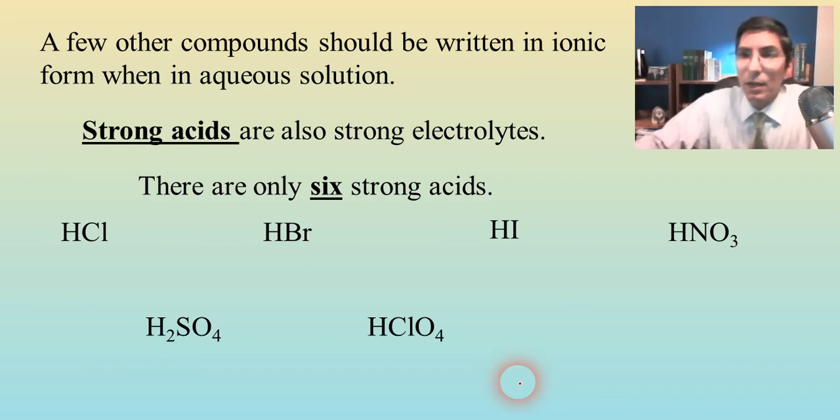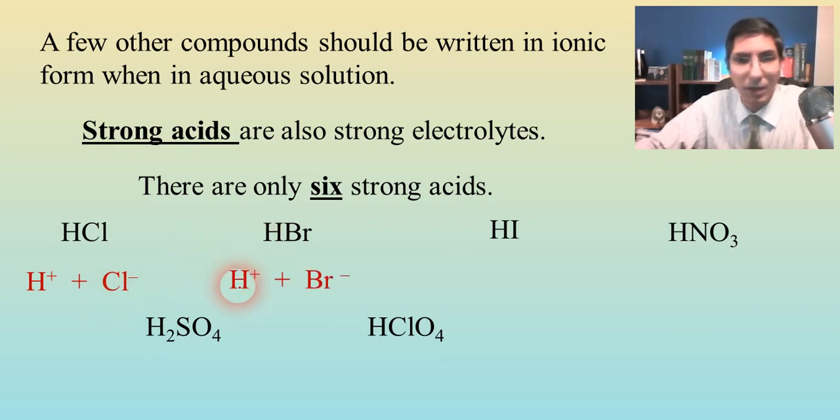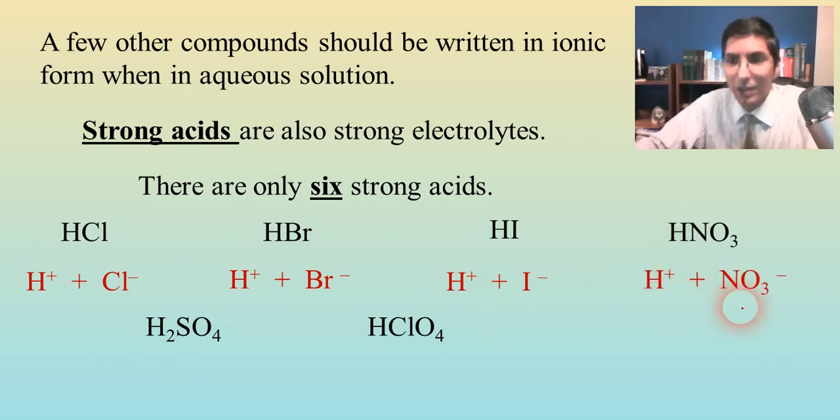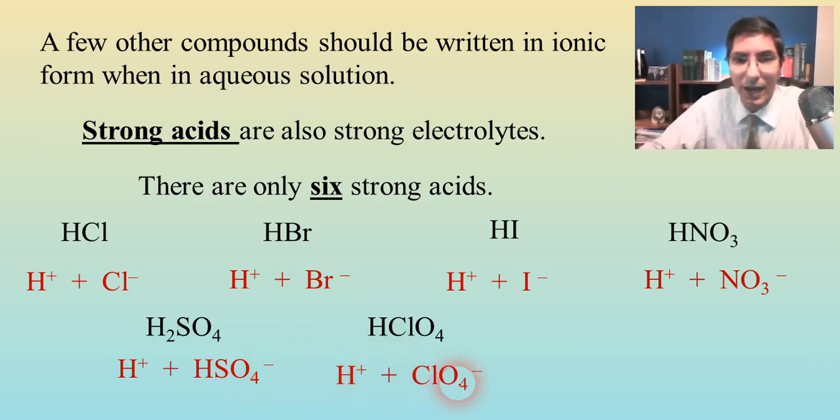Now, what that means is when these acids exist in solution, you need to write them in their ionized form, in their dissociated form. So that means hydrochloric acid is really existing as H plus and Cl negative. Hydrobromic, same thing. H plus and Br negative. Hydroiodic, H plus and I negative. Nitric acid, I think you get the point. Sulfuric acid looks a little trickier because one of those H pluses falls off and we're left with HSO4 negative, that hydrogen sulfate ion. Perchloric acid is pretty simple. H plus and then the perchlorate ion. So strong acids are strong electrolytes. They dissociate when they're in solution.